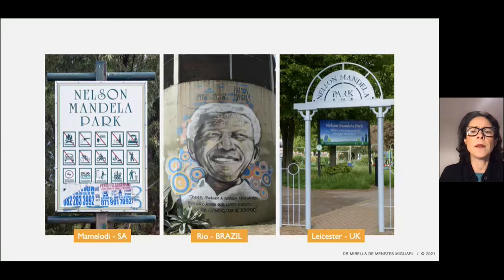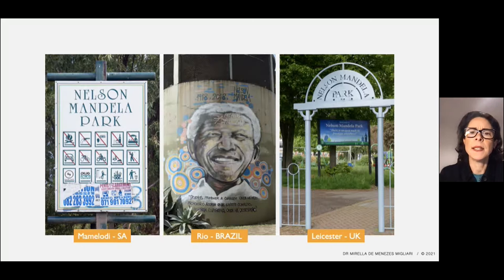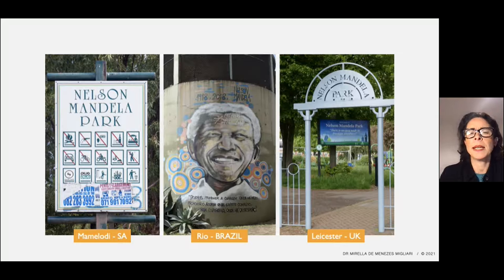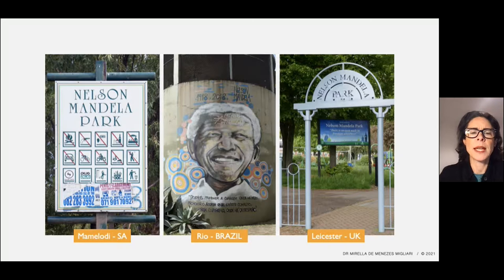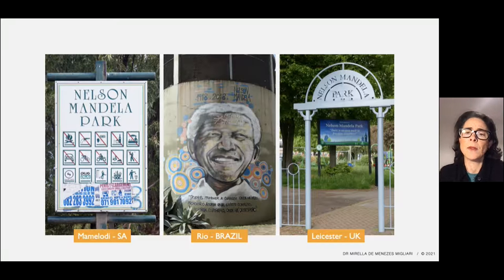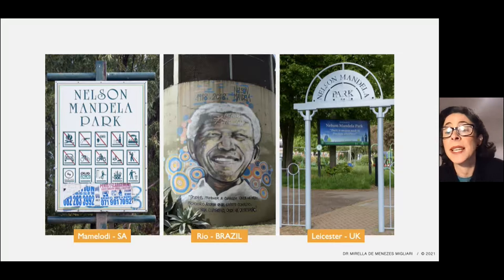Here, from left to right, a few examples of graphic objects picked up at each of the three sites: a sign displayed in Nelson Mandela Park in Mamelodi outside Pretoria; a mural displayed in Praça Nelson Mandela, Nelson Mandela Square, in Rio de Janeiro, Brazil; and a portal and outdoor in Nelson Mandela Park in Leicester, England. These assets are a sample of what we are looking at as representations of Nelson Mandela in these sites.